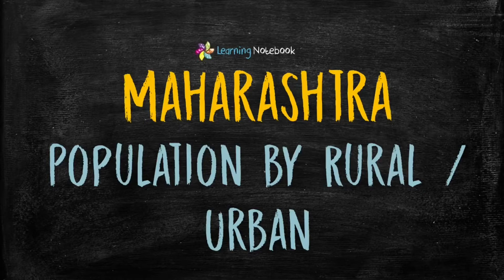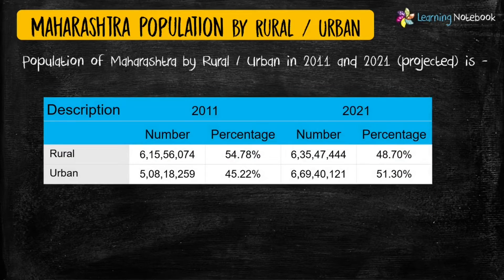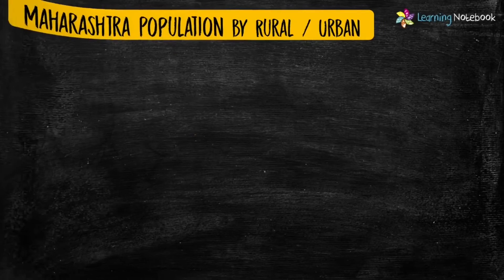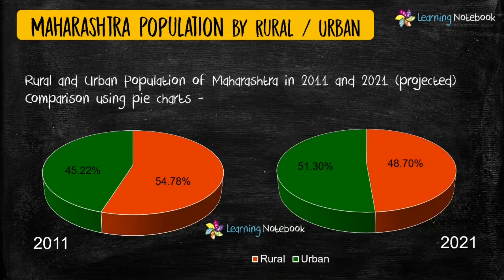Next topic for your Maths Art Integrated Project is Population of Maharashtra by Rural and Urban Divisions. See here how we have used two pie charts to compare the Rural and Urban Population of Maharashtra for two years.